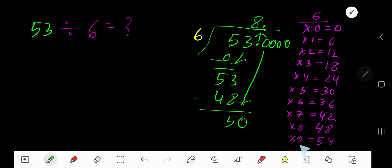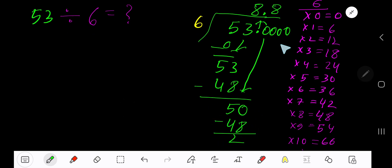6 goes into 50 how many times? 9 times 54, which is greater. So 8 times. 8 times 6, 48. If you subtract, then you are getting 2. Bring down the next.